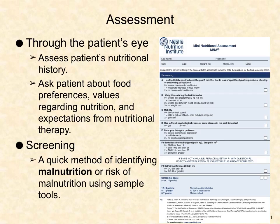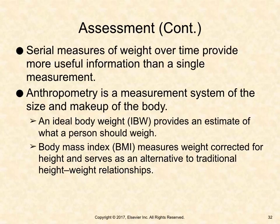Assessment: Patient-centered clinical decisions require safe nursing care. When assessing a patient's nutritional history, the nurse should ask about food preferences, values regarding nutrition, and expectations from nutritional therapy. Patients should be screened to identify malnutrition or risk for malnutrition. Several standardized nutritional screening tools are available for use in outpatient and inpatient settings. Serial measures of weight over time provide more useful information than a single measurement.